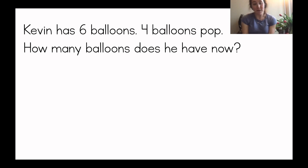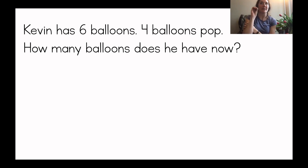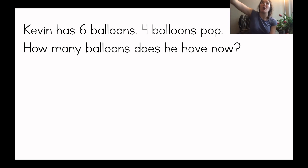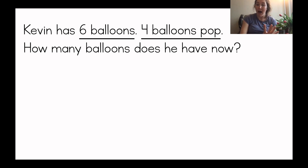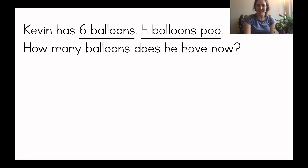Okay, so first I'm going to read the word problem: Kevin has six balloons, four balloons pop. When a balloon is popping, that means it's going away — for subtraction today, when we're subtracting, it's going to be going away. Kevin has six balloons, four balloons pop. How many balloons does he have now? First I'm going to think about how many balloons I'm starting with. Kevin has six balloons, so we'll have to show six balloons, and then four balloons are going to pop — four balloons are being subtracted.